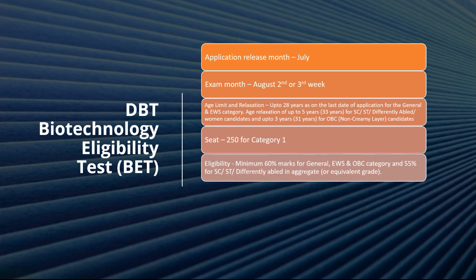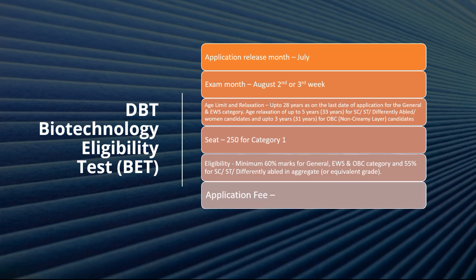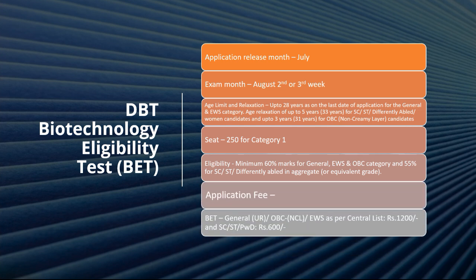To summarize: age limit is 28 years for general, 33 years for SC/ST and differently-abled, and 31 years for women and non-creamy layer OBC. Seats: 275 for Category 1 and 100 for Category 2. Eligibility: minimum 60% marks for general, EWS, and OBC categories, and 55% marks for SC/ST and other categories. Application fees: 1200 rupees for general, OBC, and EWS categories, and 600 rupees for SC/ST and PWD.